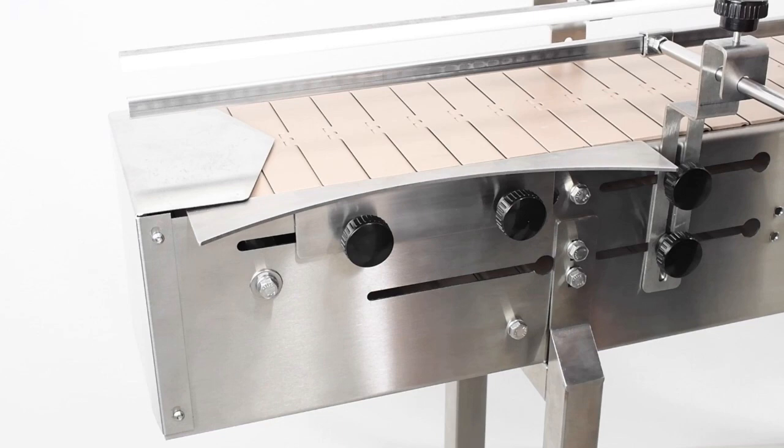To maximize the space on the conveyor, we recommend positioning the transfer plate as close to the end as possible, about 1-2 inches.